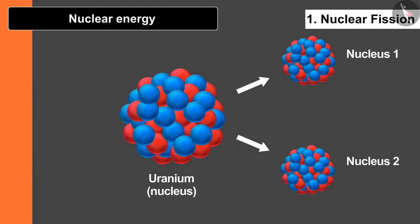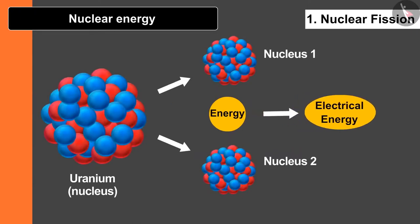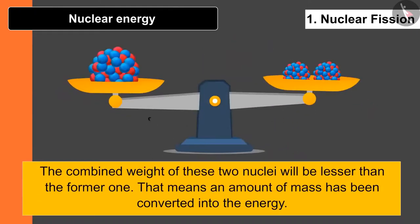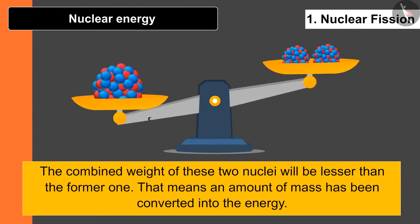To stabilize this, a low energy neutron is bombarded with it. Then we will get two stable nuclei. In this process a huge amount of energy is released which can be used to obtain electrical energy. The combined weight of these two nuclei will be lesser than the former one. This means an amount of mass has been converted into the energy.